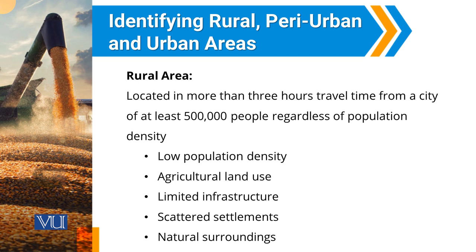So, they basically categorized an area as peri-urban if travel distance is one to three hours from a major city, and if this travel time is more than three hours, they categorize the area as a rural area.